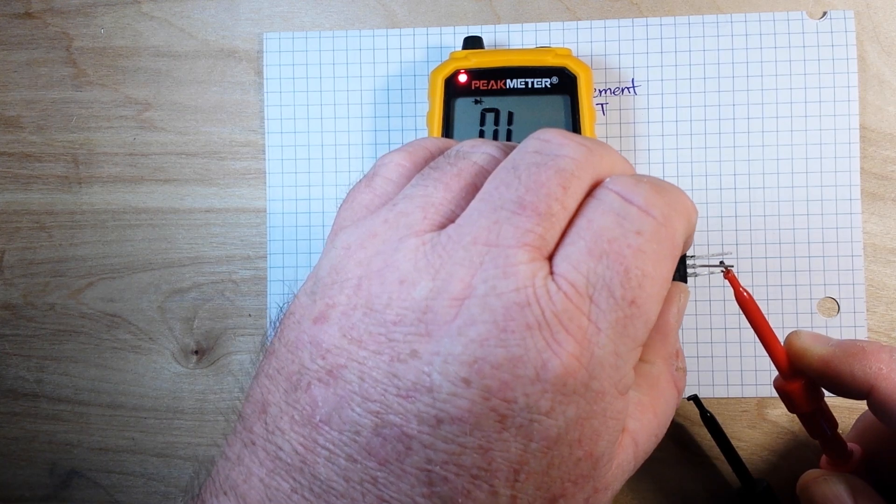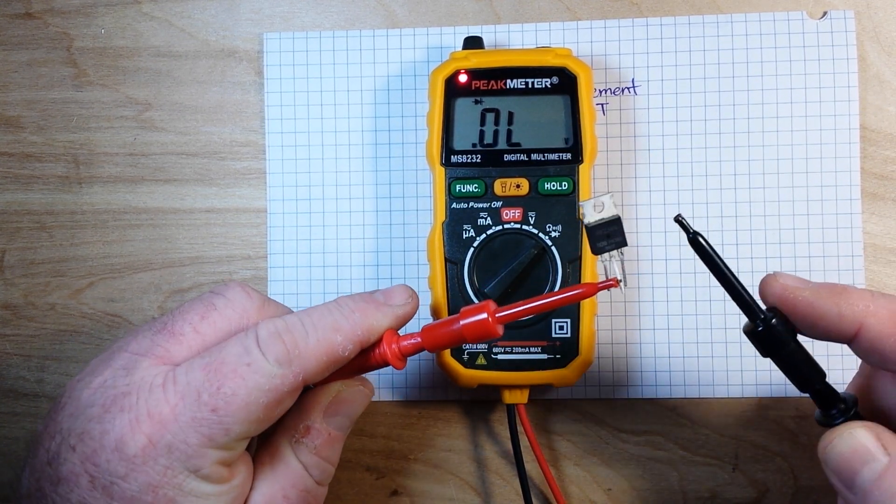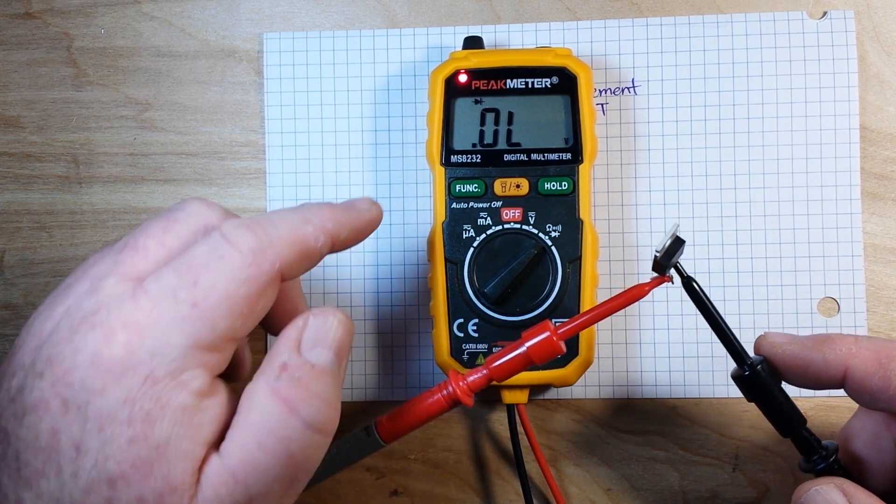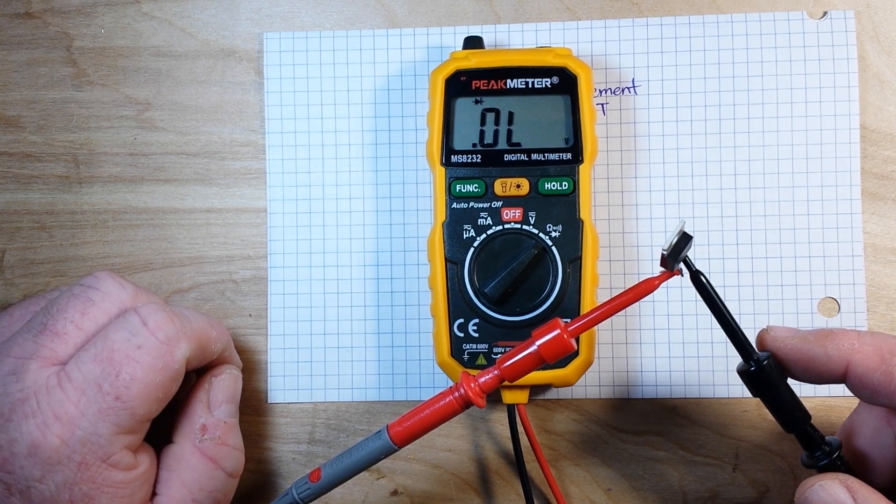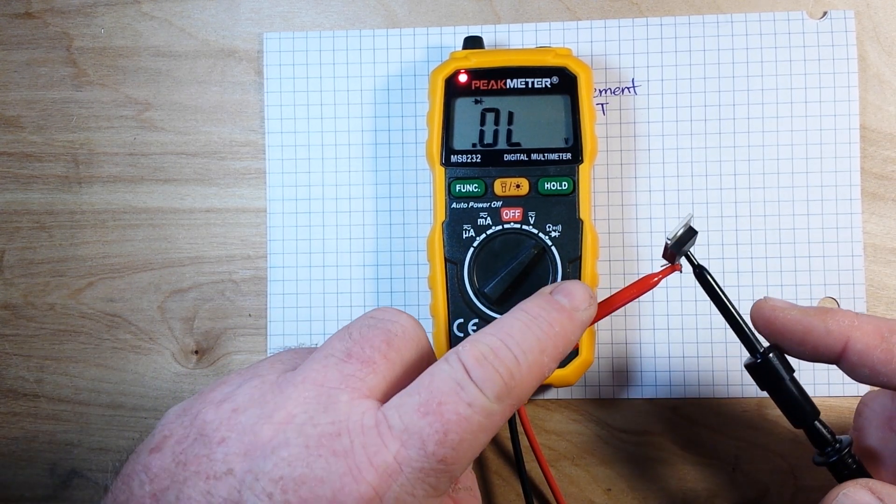All right, now put your positive pin on the drain and the negative on the source, and you should see no conduction.